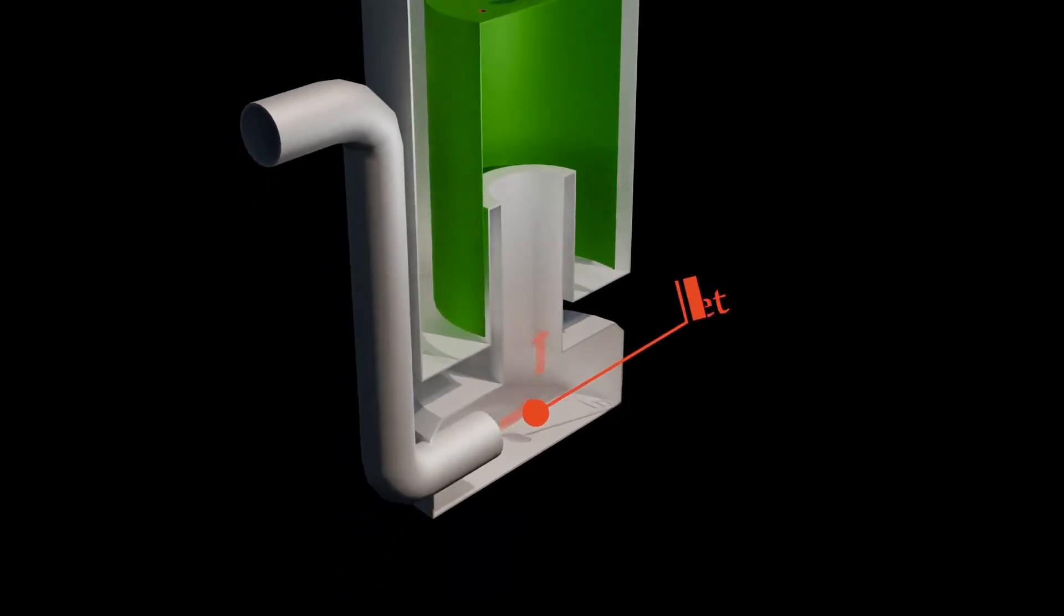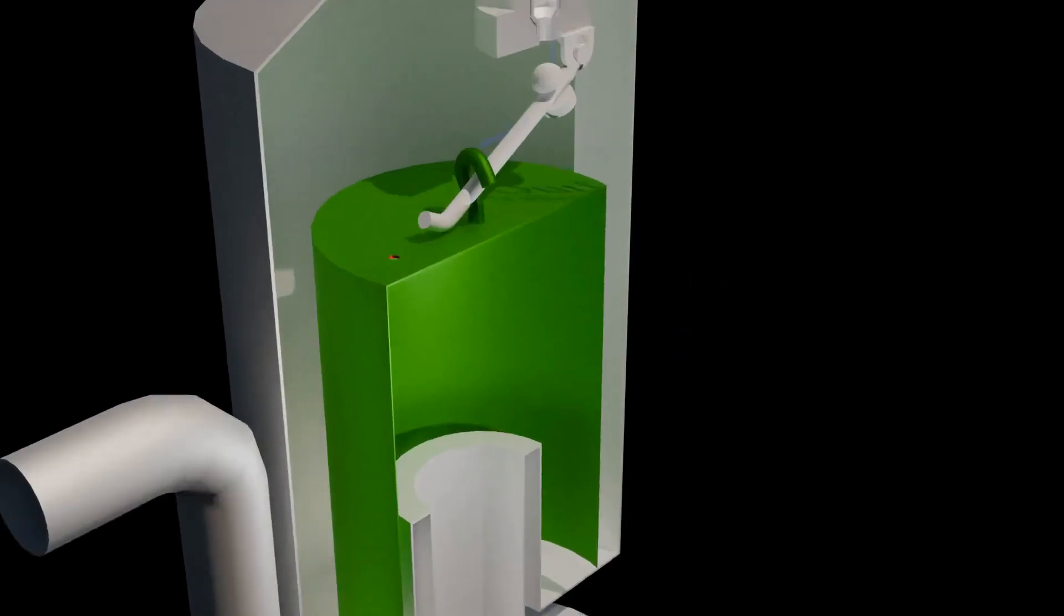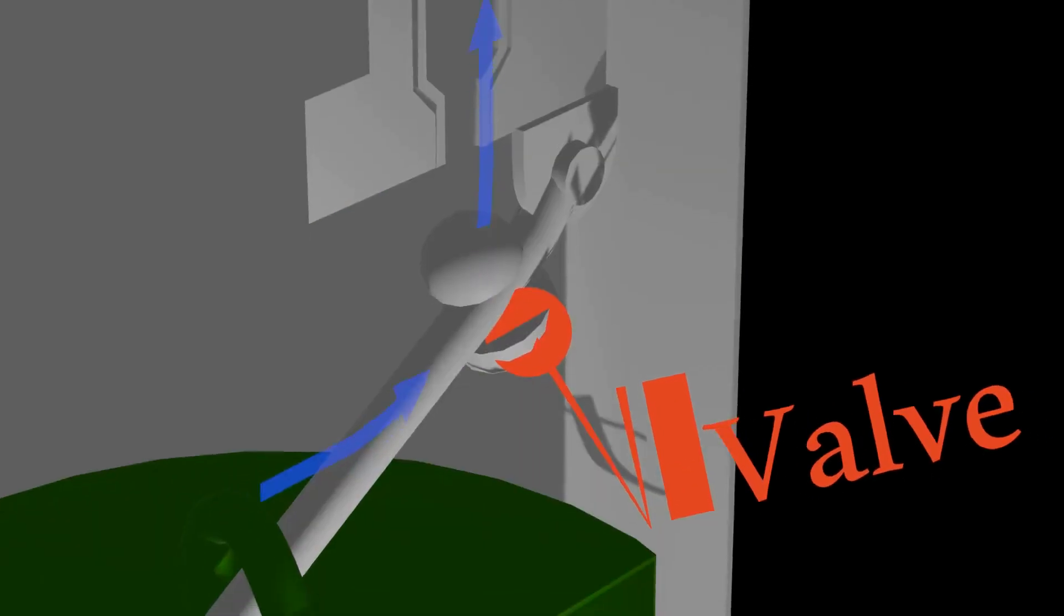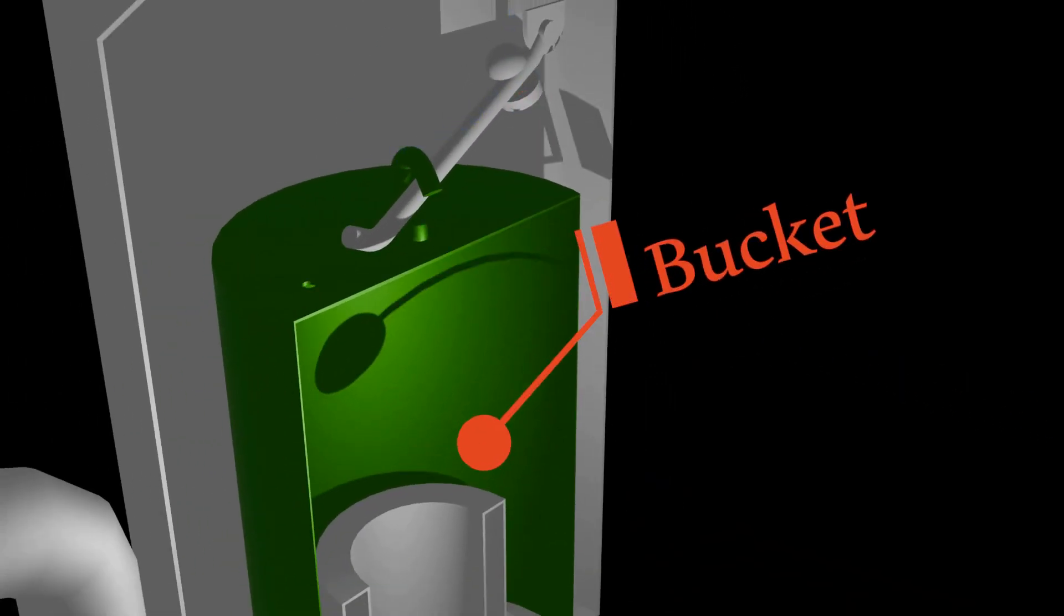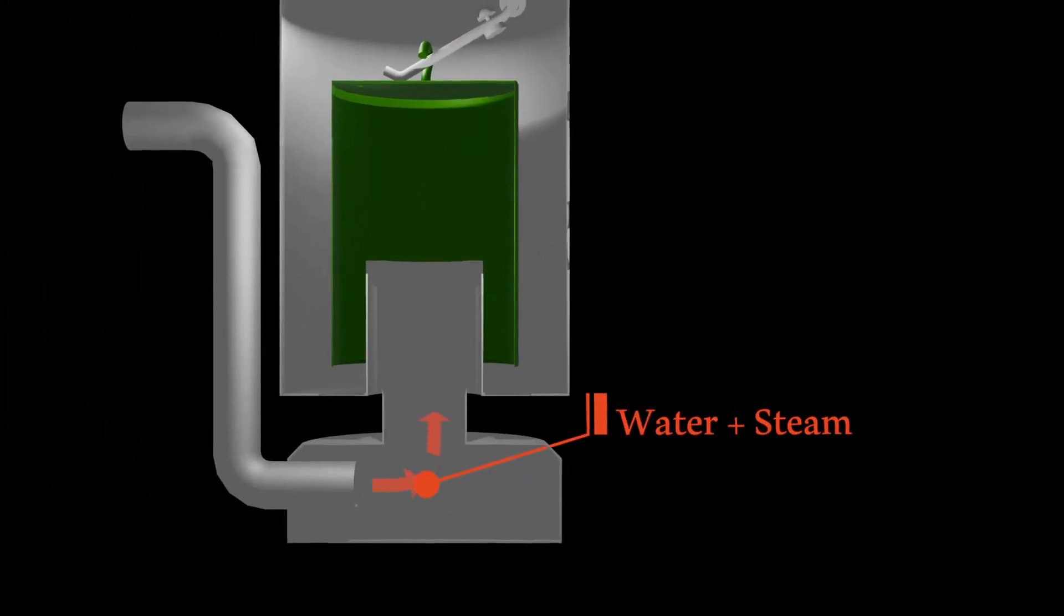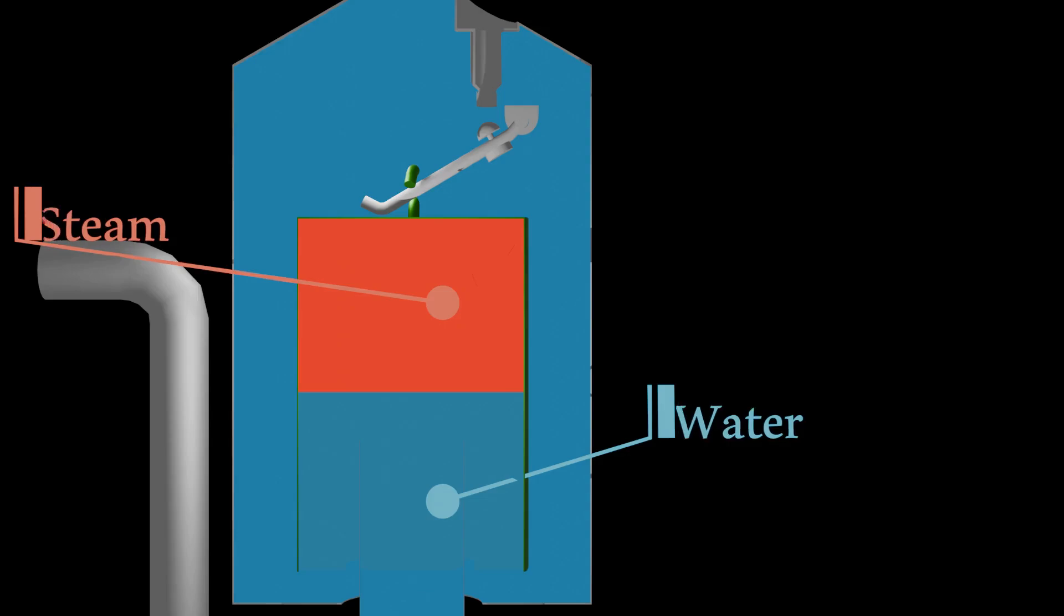It consists of an inlet, an outlet, a valve, and a bucket. Water and steam enters from the inlet. The level of the water is maintained above the bucket. Steam is trapped between the inverted bucket and the water.